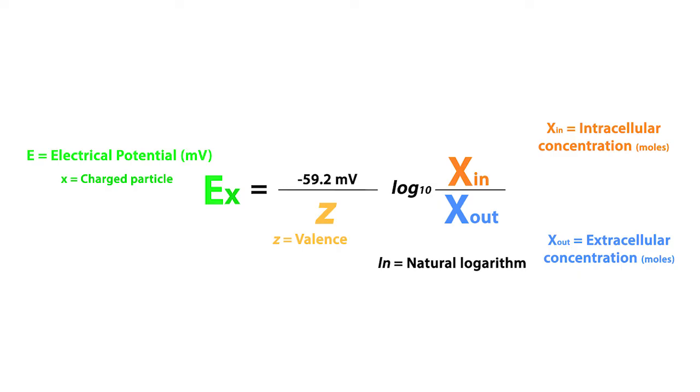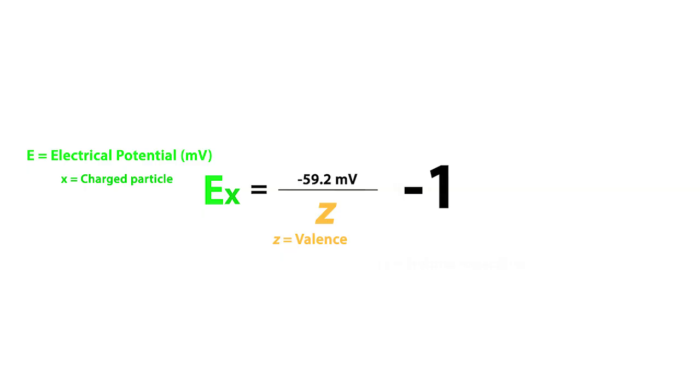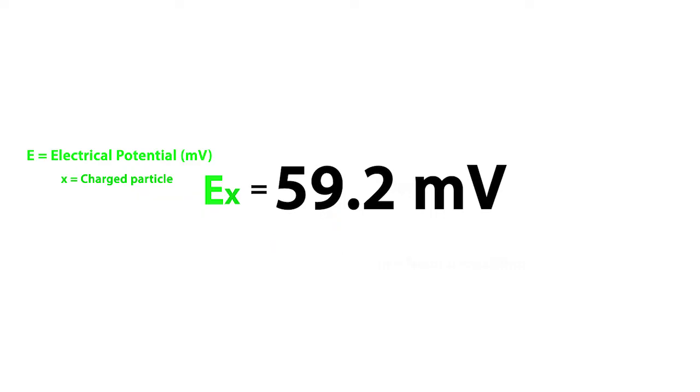Now, let's say the intracellular concentration of the charged particle equals 10 millimoles, and the extracellular concentration equals 100 millimoles. Now, the log base 10 of 10 millimole over 100 millimole equals negative 1. So, minus 59.2 millivolts over a Z of plus 1 times negative 1 gives us an equilibrium potential of positive 59.2 millivolts.